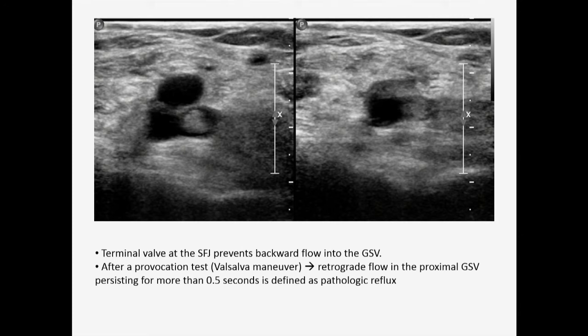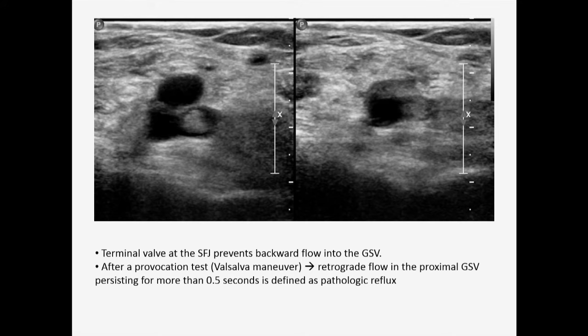The terminal valve at the saphenovenous junction prevents backflow into the great saphenous vein. Whenever we do a provocative test like Valsalva, retrograde flow in the proximal GSV persisting more than half a second is defined as reflux.